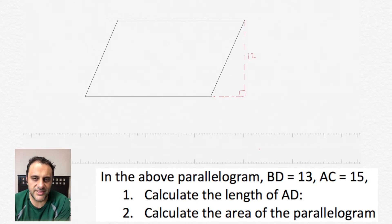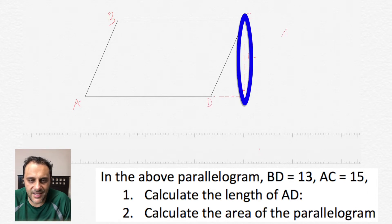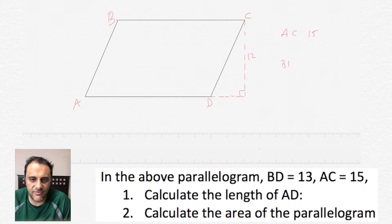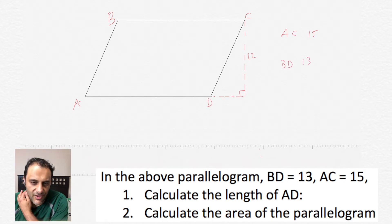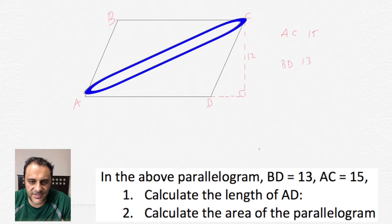In this parallelogram we have points A, B, C, and D. They give us the height which is 12. The height is any point on the baseline going straight up to the top line. So that's 12 and they also give us AC. That segment there is 15.